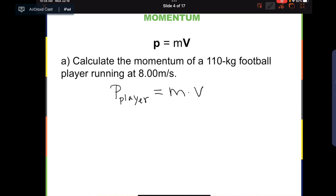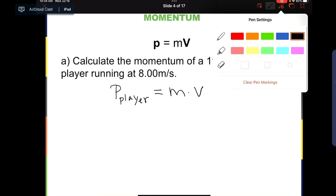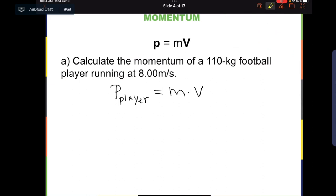We know that m is mass and v is velocity. In this problem, mass is 110 kg and velocity is 8.00 meters per second. Therefore, we can plug these two numbers into this formula: 110 times 8.00, and the answer is 880 kg meters per second.